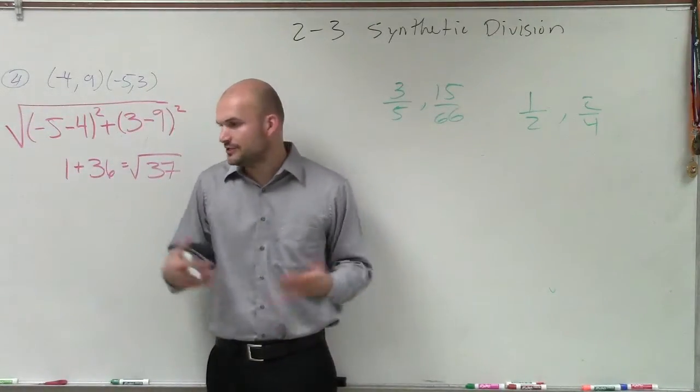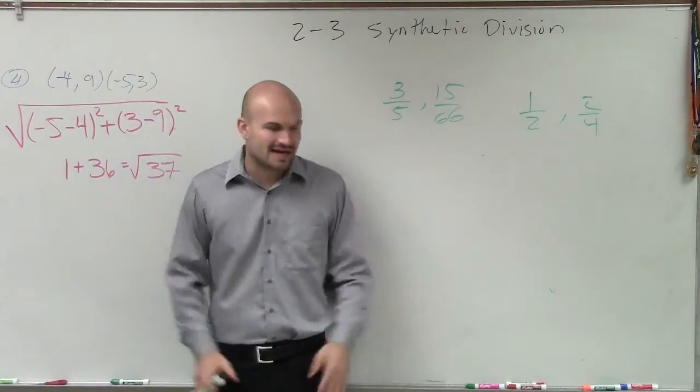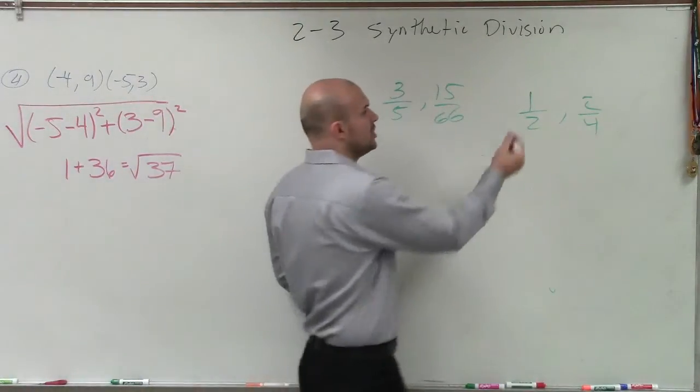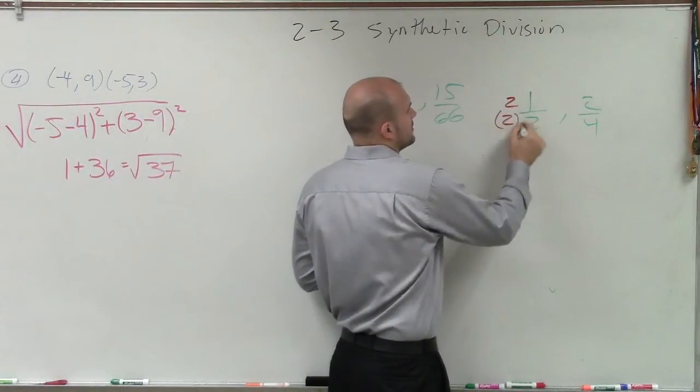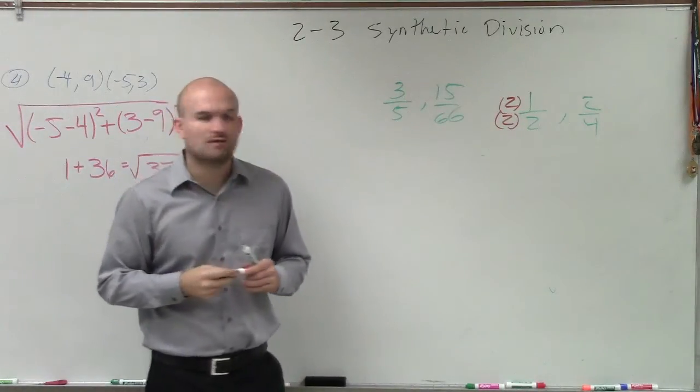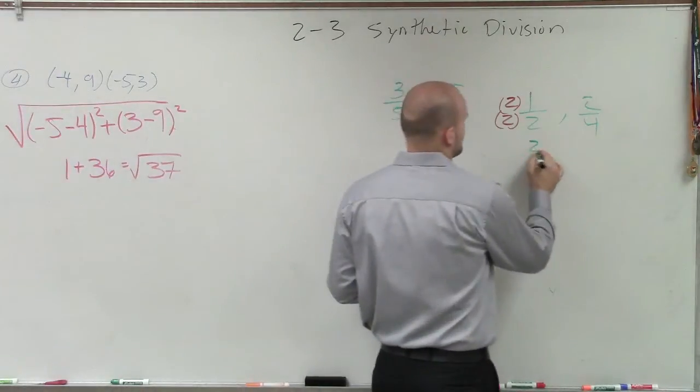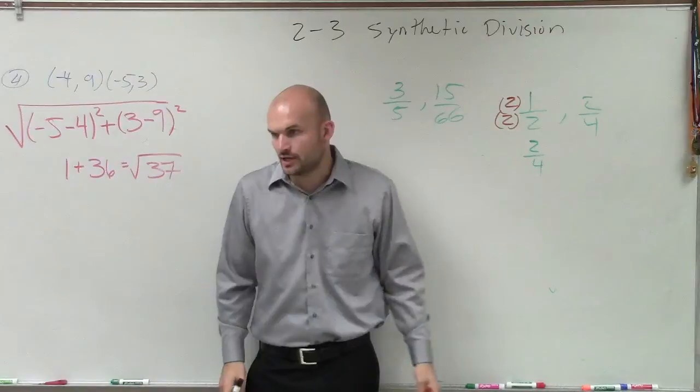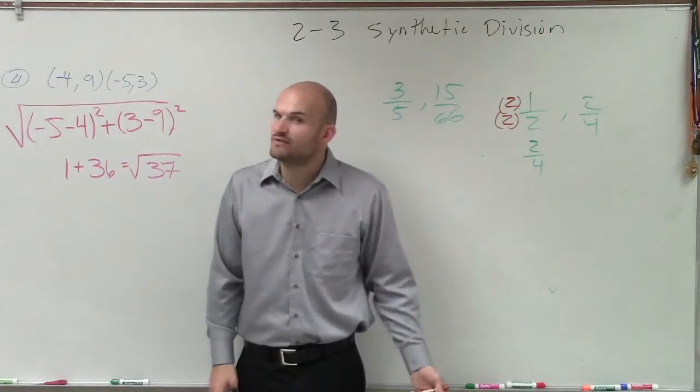If you have one half of something and you have two fourths of something, it's the exact same. And the reason that we can show that they're equivalent is all I need to do is multiply my one half by a multiplier of two over two and I get two fourths. Right? Showing that these are equal to one another. So therefore they're equivalent.